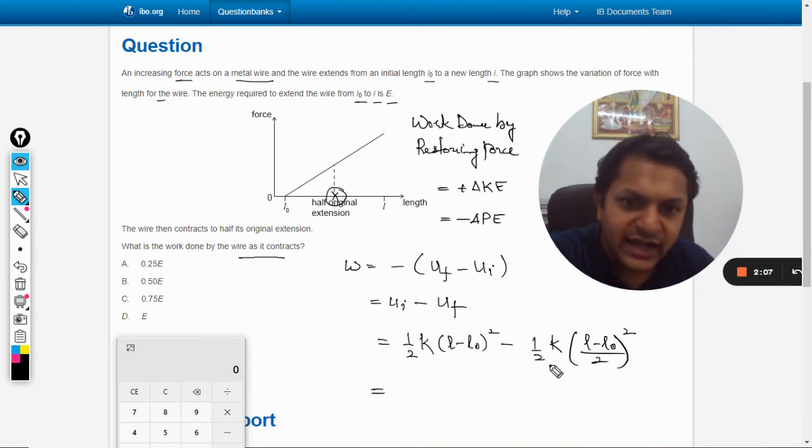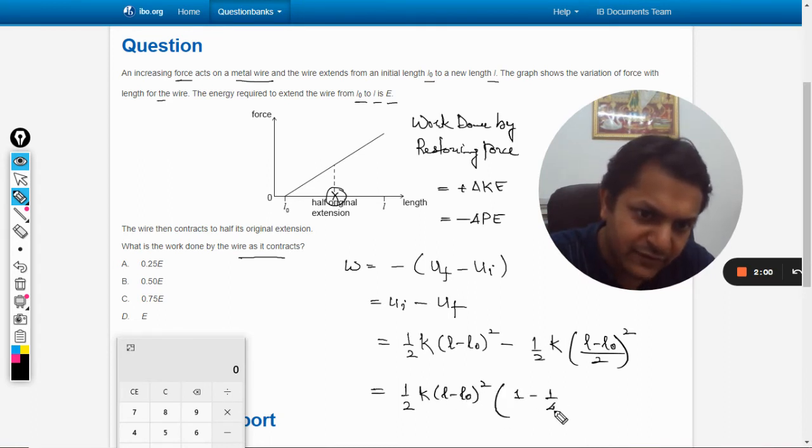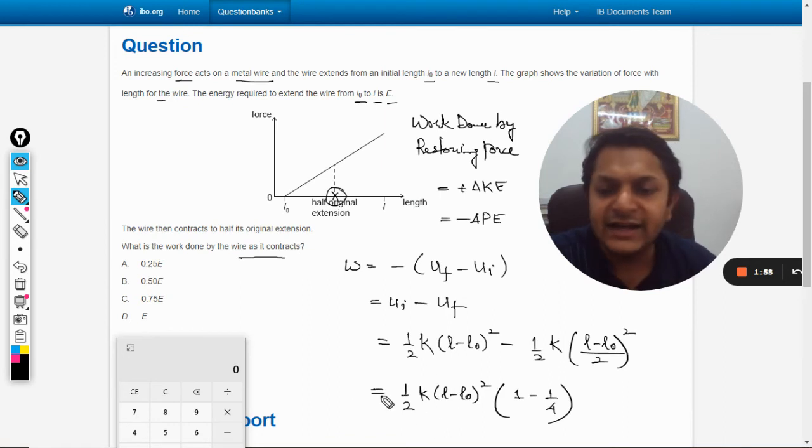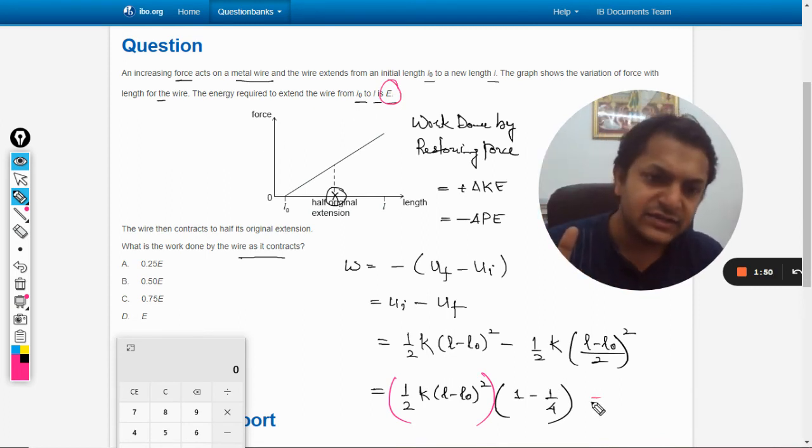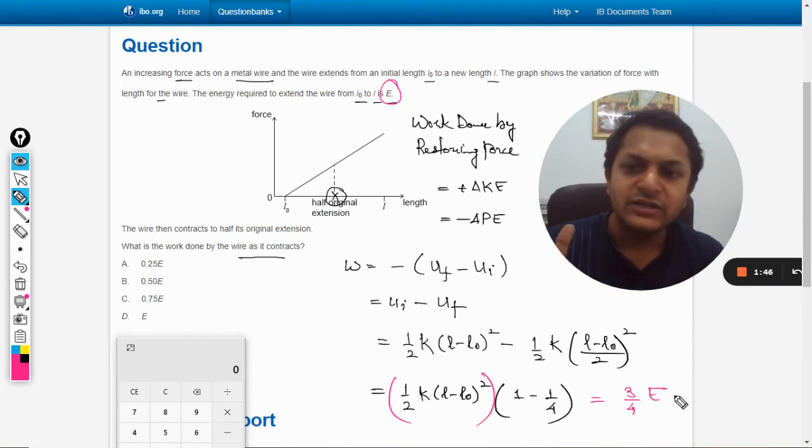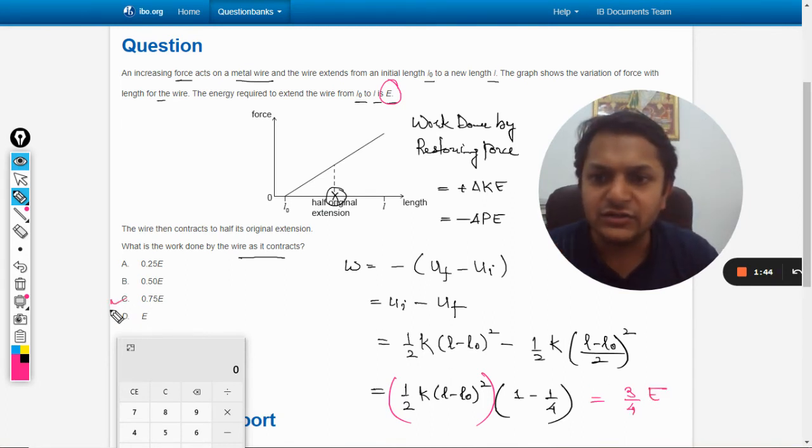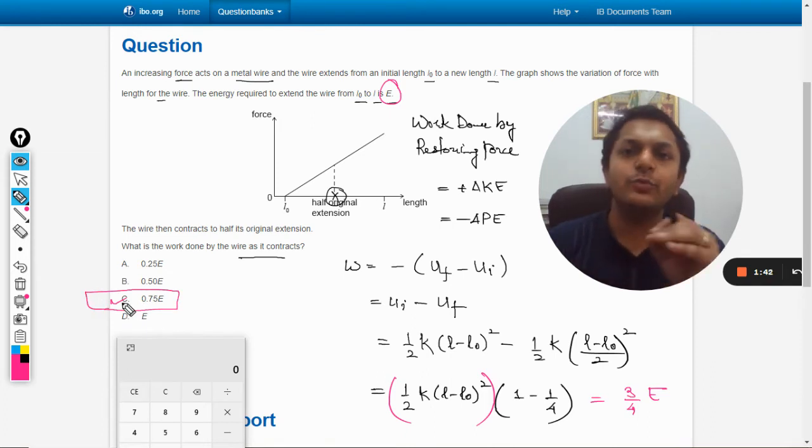We can take this as common; we would be left with this much. This is given as E in the question, so we can substitute this as E. It will become 3/4 E. Simply, your answer will be C, that is 0.75E.